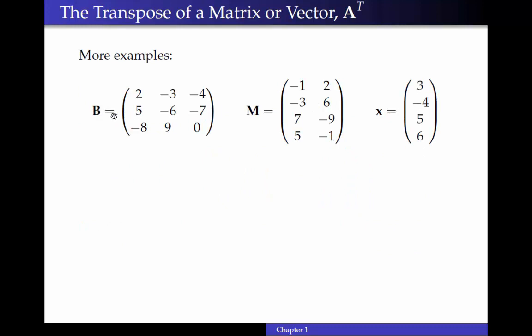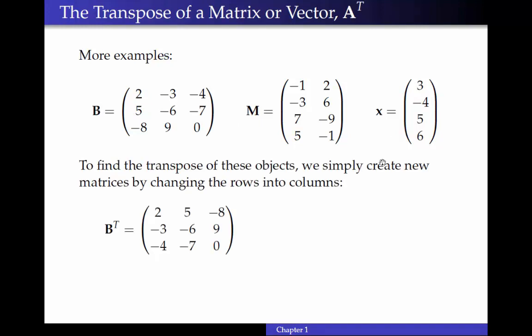Here are some more examples. I have three matrices. One of them is a vector. And to find the transpose, we simply create new matrices by changing the rows into columns. So the first row of B is 2, negative 3, negative 4, and that becomes the first column of B transpose. You can see the second row becomes the second column. Third row becomes the third column.